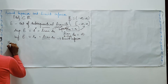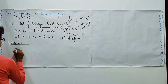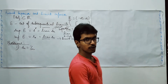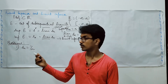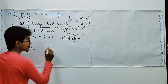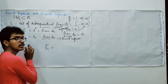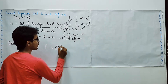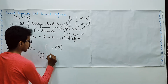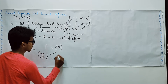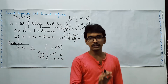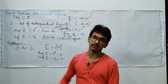Consider Sn = 1/n. We know that it is a convergent sequence. Whenever a sequence is convergent, the collection of sub-sequential limits is the same as the limit of the sequence, which is 0. So the supremum of E and infimum of E, that is S upper star as well as S lower star, are both 0. For convergent sequences, the limit of the sequence is going to be both the limit superior and limit inferior.